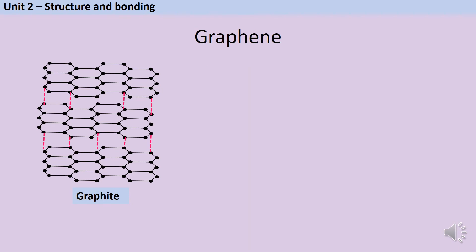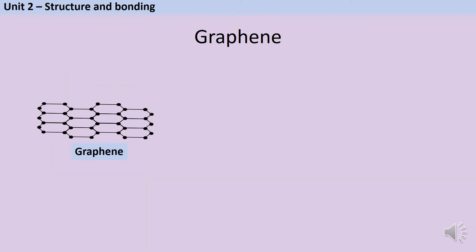If you take a piece of graphite and you use adhesive tape to remove just one of the layers, then what you're left with is a substance called graphene. Graphene is a single layer of graphite, and for a long time it was touted as a wonder material.